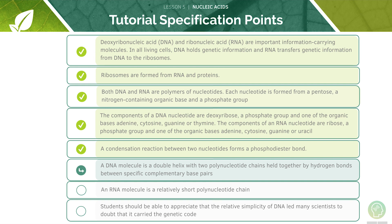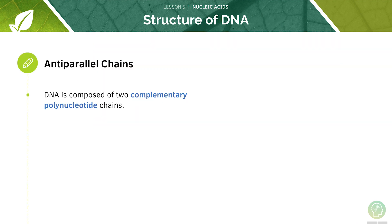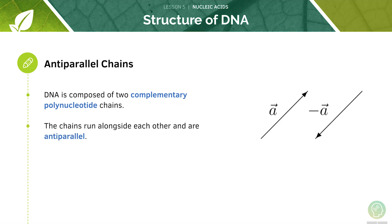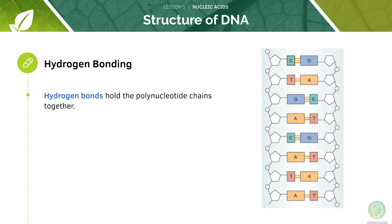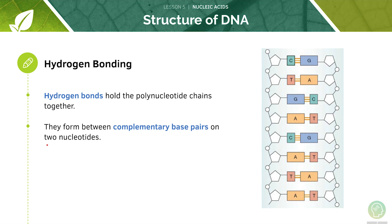Now let's look at DNA molecules in more detail. DNA is made up of two complementary polynucleotide chains. These chains run alongside each other and they are called anti-parallel. Hydrogen bonds hold these polynucleotide chains together, forming between the complementary bases on the two nucleotides.